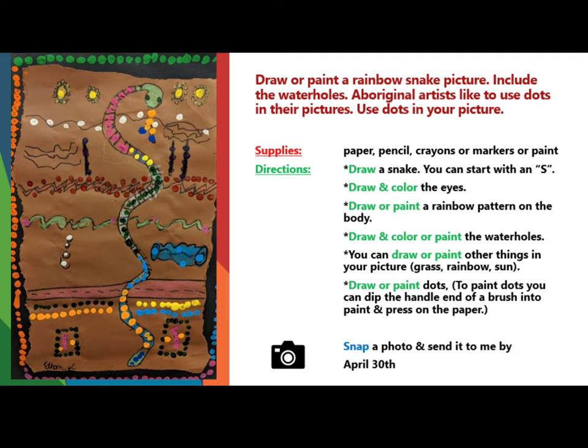Directions: Draw a snake — you can start with the letter S. Draw and color the eyes. Draw or paint a rainbow pattern on the body. Draw and color or paint the waterholes. You can also draw or paint other things in your picture.